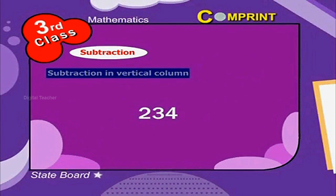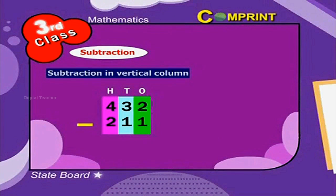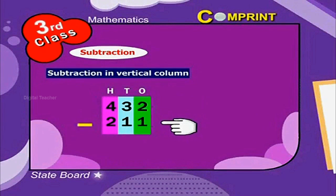Simple subtraction in vertical column. For example, 432 minus 211. Step 1: Let us arrange the numbers according to the place values.